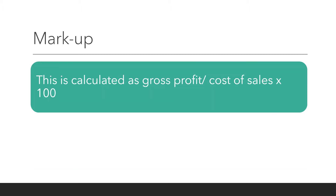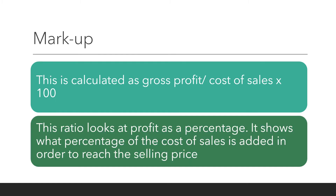Markup. Markup is calculated as gross profit divided by cost of sales, times by 100. This ratio looks at profit as a percentage — it shows what percentage of the cost of sales is added in order to reach the selling price.